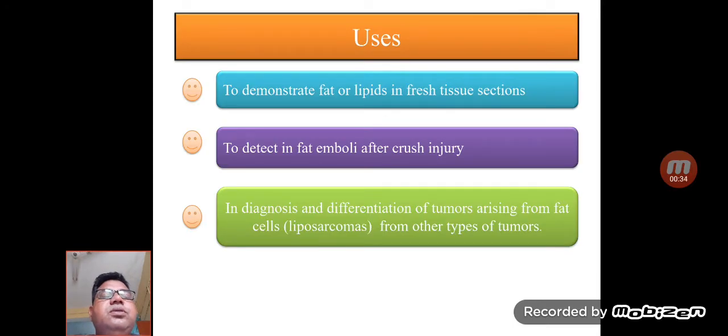The uses of this staining: it is basically used to demonstrate fats and lipids in tissue sections, and is also useful to demonstrate fat emboli after crush injury.